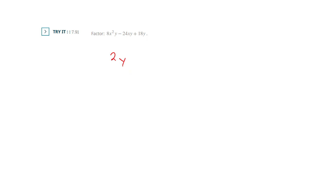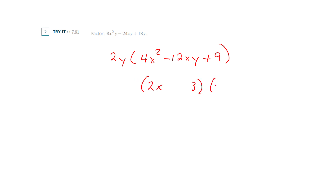This one has a GCF too, so pull that out first and then try the perfect square pattern. My GCF is 2y. Now check for square roots on the front and the back, and I've got them: 2x. I've got a middle — the middle is a minus, so I get two minuses. Don't forget to bring down your GCF. Check the middle — this one works out.